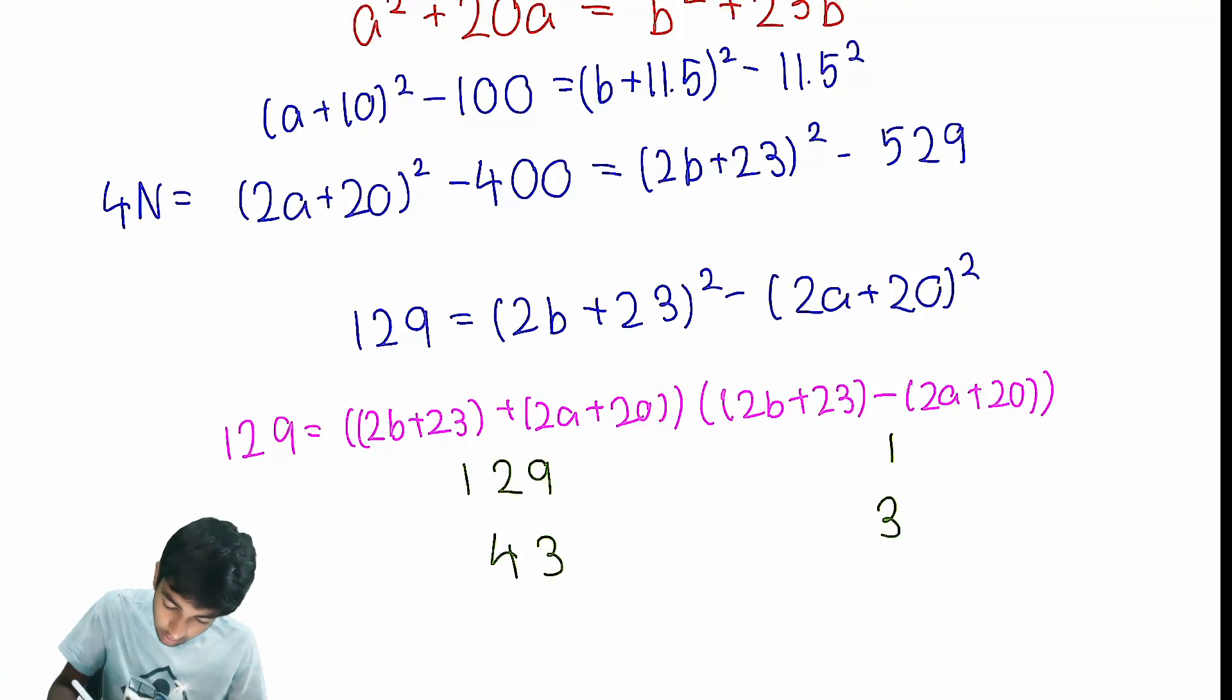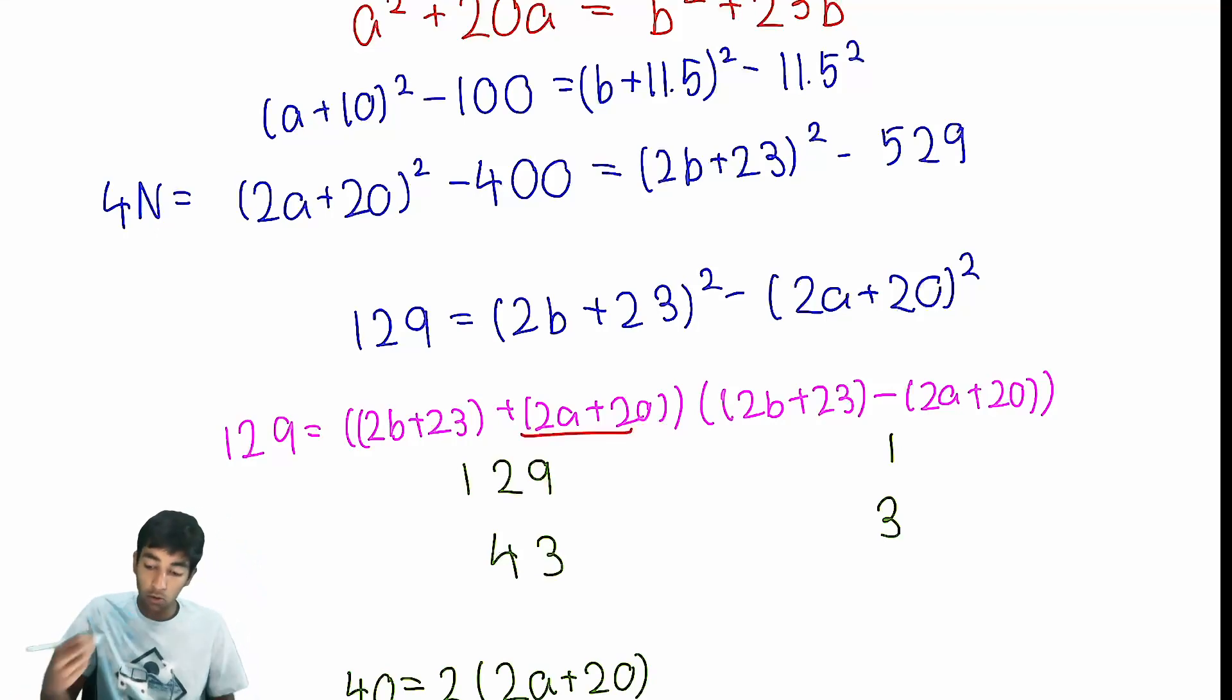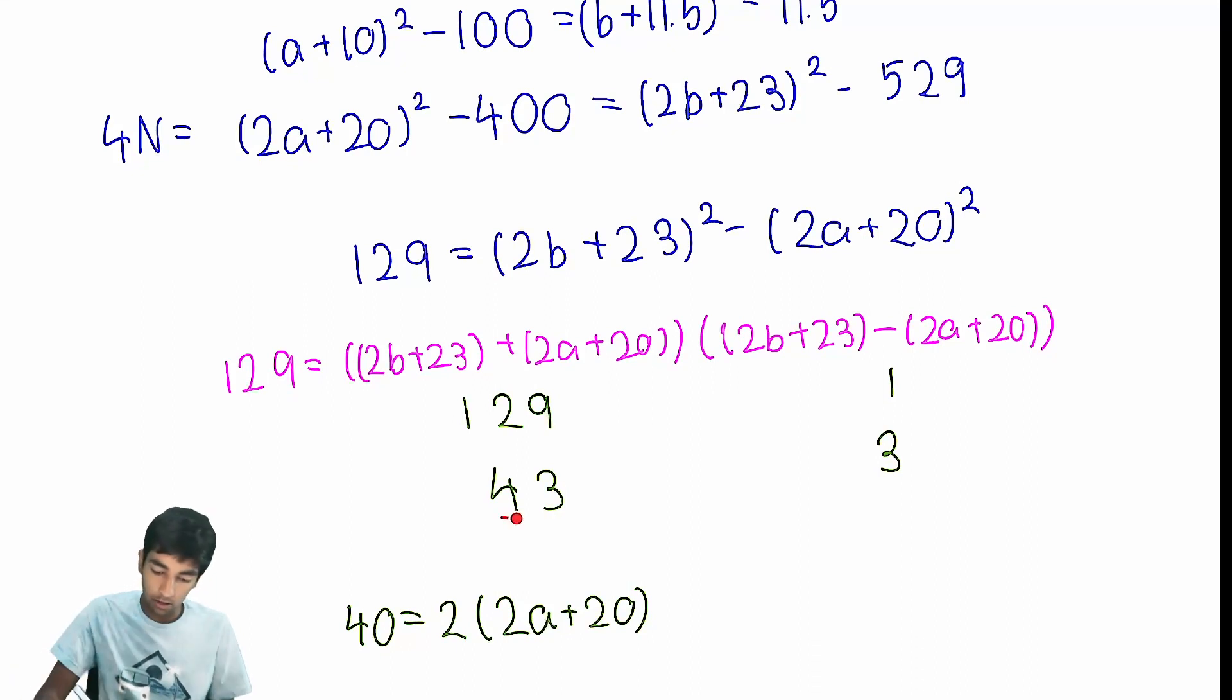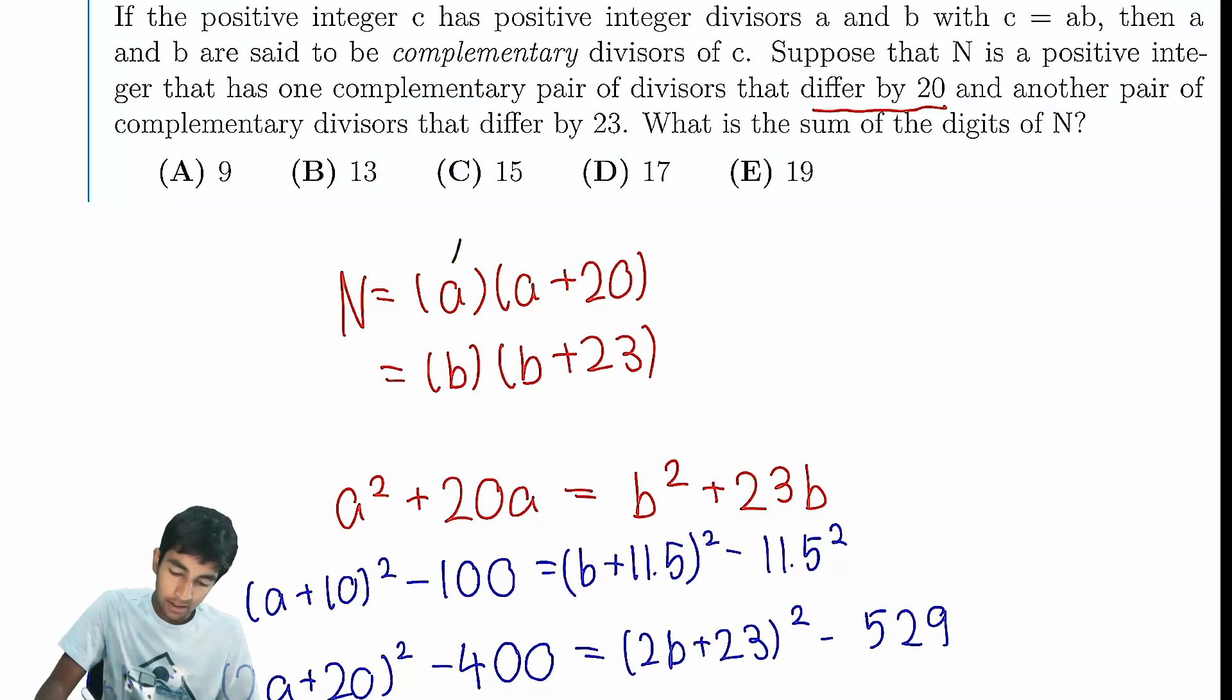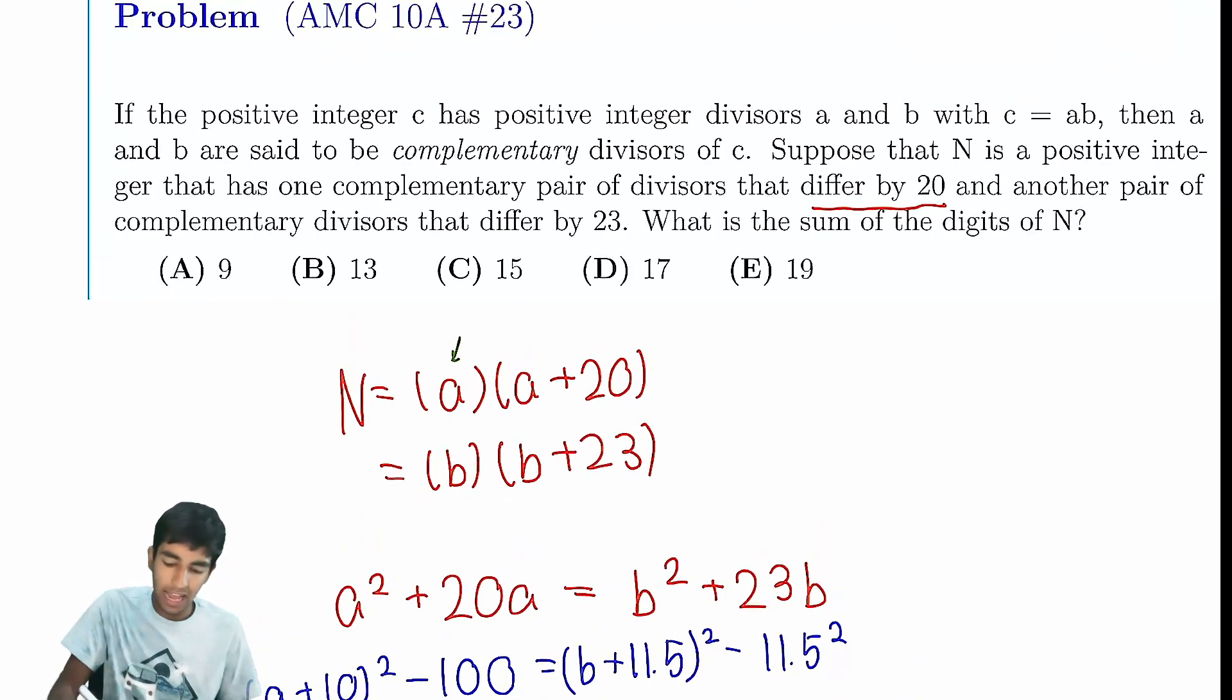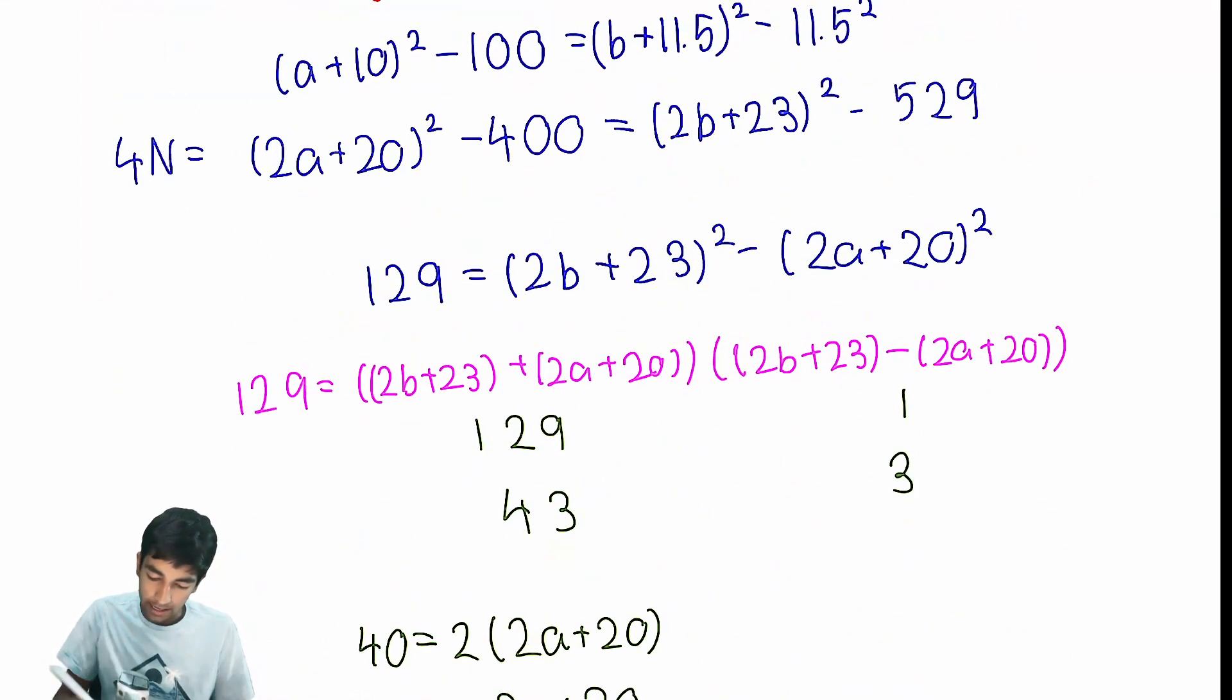They differ by 2A plus, if we subtract this quantity and this quantity, we get that 43 minus 3, or 40, equals 2 times 2A plus 20. Why? Because this thing is plus 2A plus 20, this thing is minus 2A plus 20. So 2 times 2A plus 20 is just their difference, 40. And therefore, from here we get 20 equals 2A plus 20, or A equals 0. But look, if A is 0, now N is 0, and N is a positive number, so that can't be right. Therefore, we've eliminated the second case.